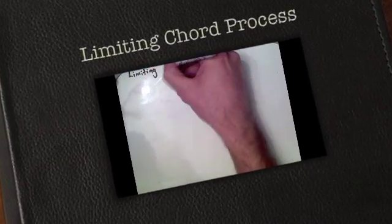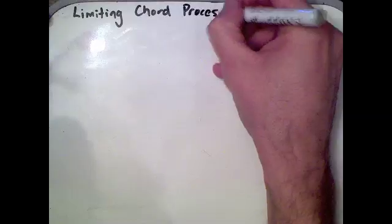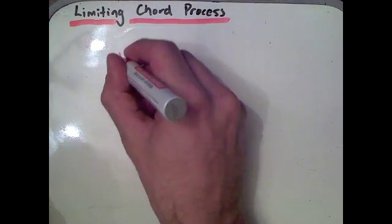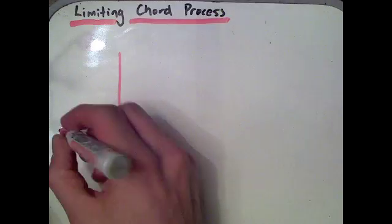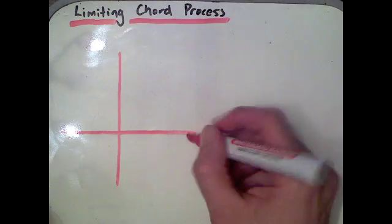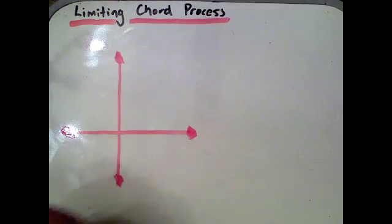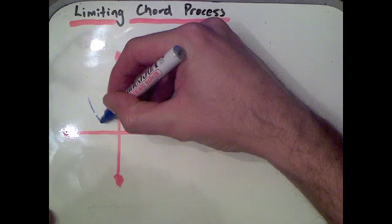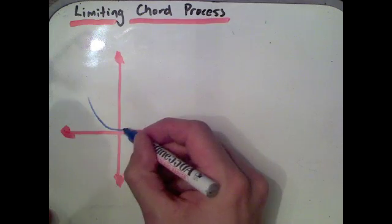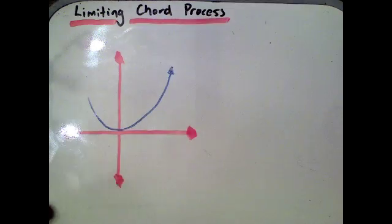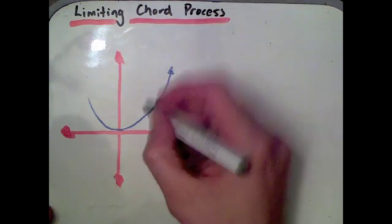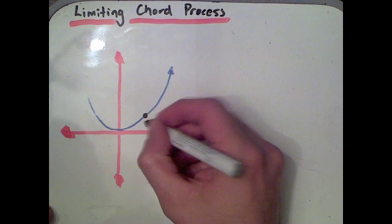Let's have a look at this process called the limiting chord process, or sometimes referred to as first principles. The limiting chord process is about limiting — that is, reducing — a chord. A chord is a line segment joined between two points on a circle, or in this case we're going to use a curved surface.